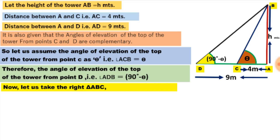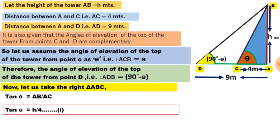Let us take right triangle ABC first. The angle of elevation at C is theta. The opposite side for this angle is H meters, and the adjacent side AC equals 4 meters. We take the ratio of opposite to adjacent, so we use the tan ratio. Therefore, tan theta equals AB divided by AC, which gives tan theta equals H divided by 4. Let us call this Equation 1.